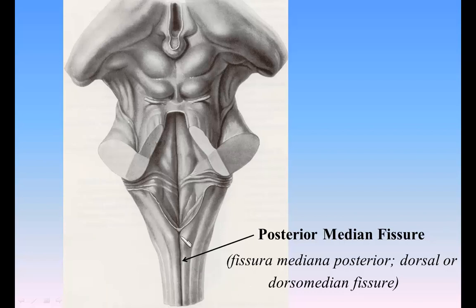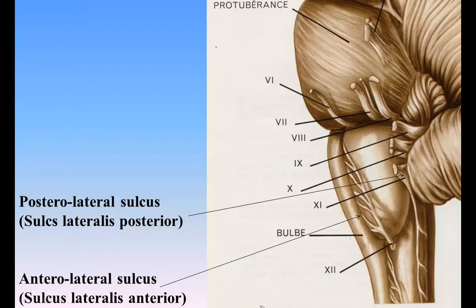The posterior median fissure (fissura mediana posterior; dorsal or dorsomedial fissure) is a narrow groove and exists only in the closed part of the medulla oblongata. It becomes gradually shallower from below upward and finally ends about the middle of the medulla oblongata where the central canal expands into the cavity of the fourth ventricle. These two fissures divide the closed part of the medulla oblongata into symmetrical halves, each presenting elongated eminences which, on the surface view, are continuous with the funiculi of the medulla spinalis. In the open part, the halves are separated by the anterior median fissure and by a median raphe which extends from the bottom of the fissure to the floor of the fourth ventricle. Certain of the cranial nerves pass through the substance of the medulla oblongata and are attached to its surface in series with the roots of the spinal nerves.